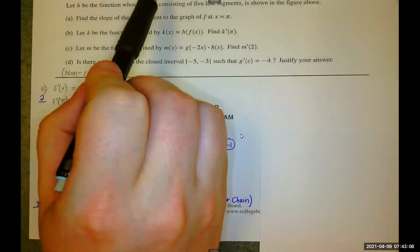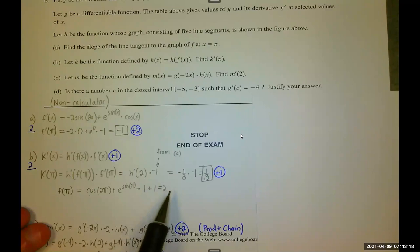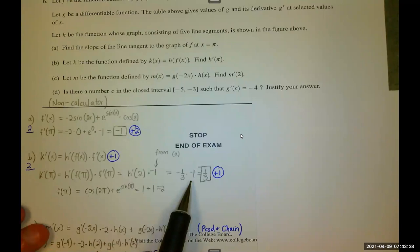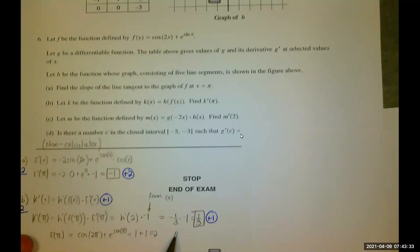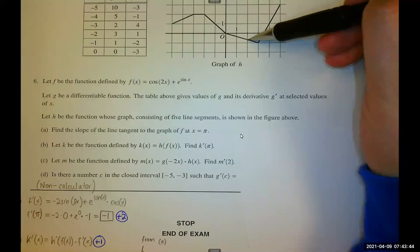F is the equation. Cosine of 2X, E to the power of sine of X. You can see I did that calculation down here. That's how we got a 2 for F of pi. Negative 1, I calculated in part A. So negative 1 third times negative 1 is 1 third. Oh, but where did the negative 1 third come from? The negative 1 third came from doing the graph of H. Find H prime at 2.